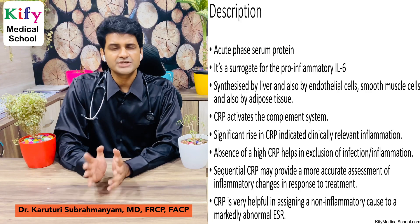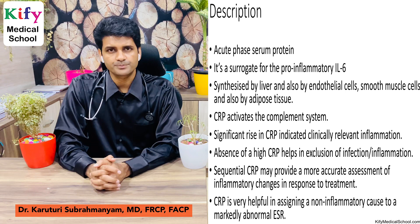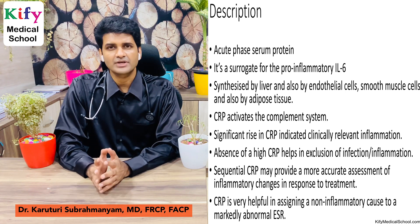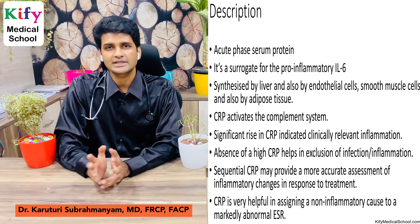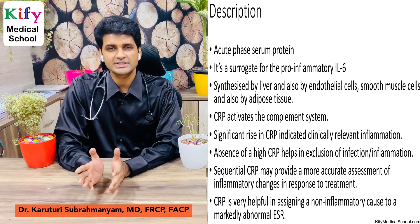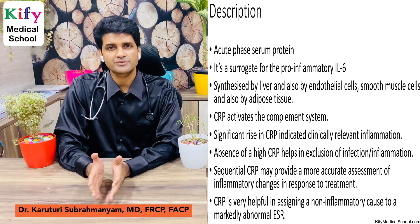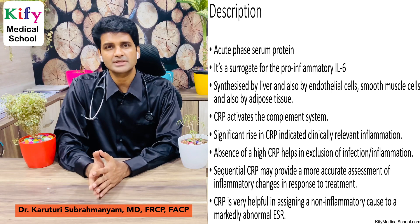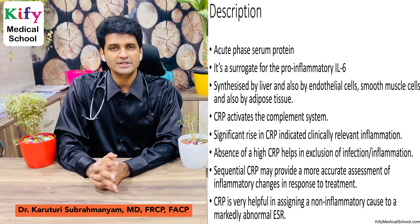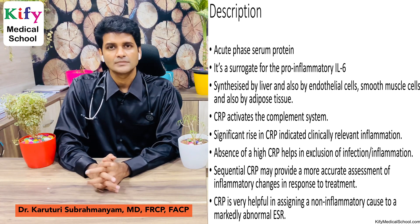CRP is an acute phase serum protein and serves as a surrogate for the pro-inflammatory cytokine IL-6, meaning you get essentially the same information from a CRP level as from an IL-6 level. CRP is a much cheaper test compared to IL-6, which is very costly.